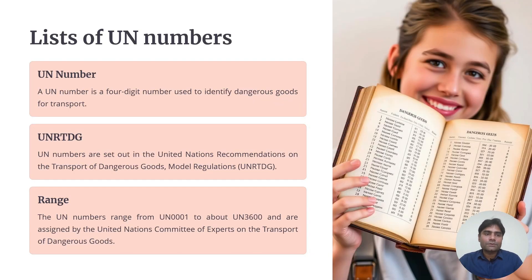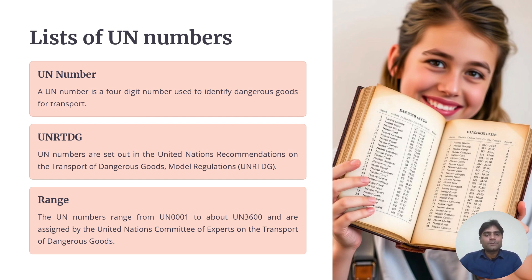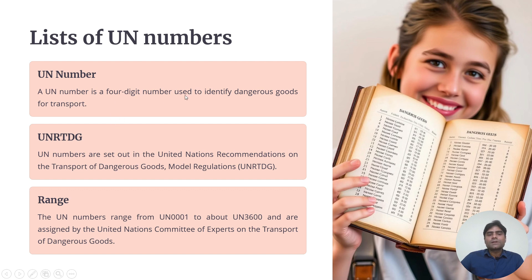Now coming to the list of UN numbers. The United Nations has defined different categories of dangerous goods and has given some four-digit numbers to identify them. Generally, they have given a serial from 0001 to 3600 — certain numbers in 3600 are vacant. These four-digit numbers are used to identify dangerous goods for transport, and the UN numbers are set out in the UN recommendations on transport of dangerous goods model regulations, ranging from 1 to 3600.